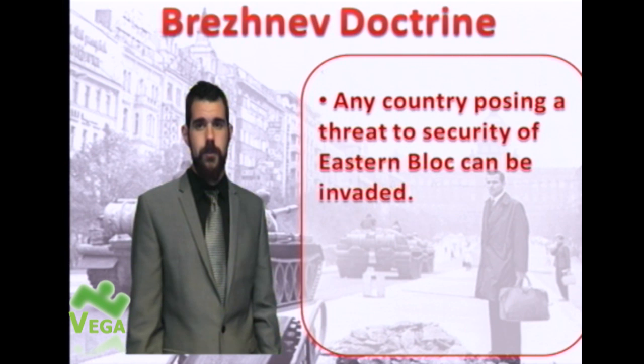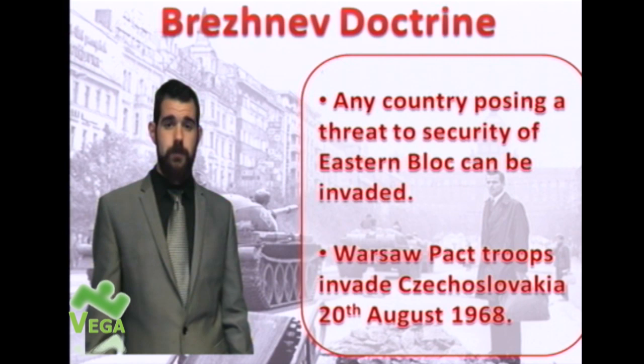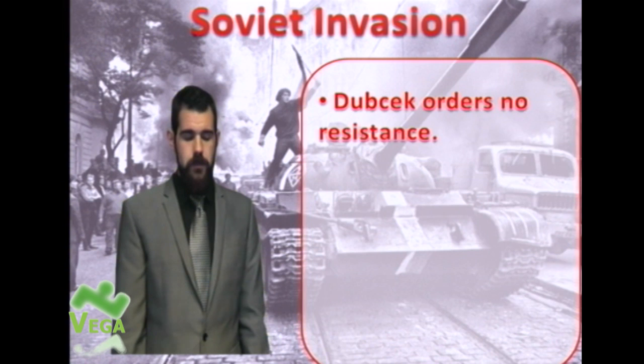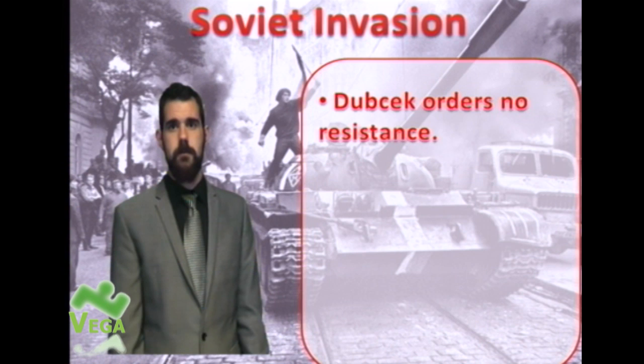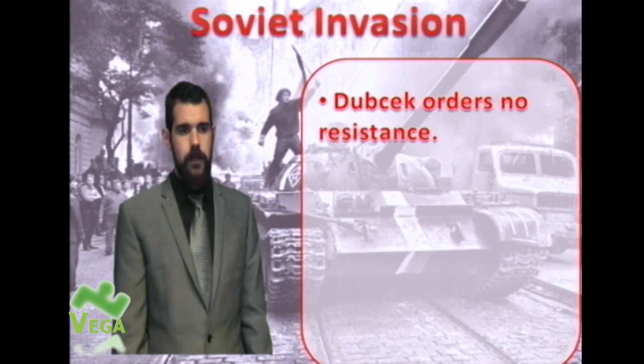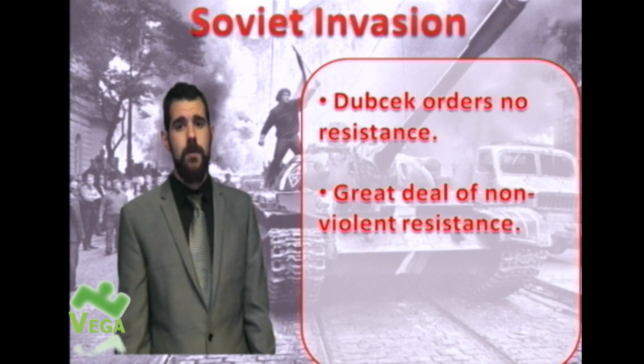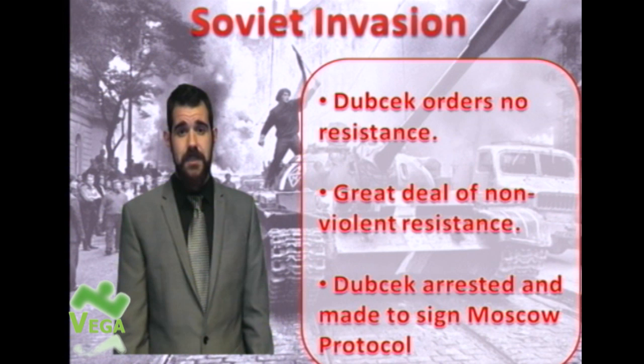This leads to the Brezhnev Doctrine: any country posing a threat to the security of the Eastern Bloc can be invaded. It's a fairly direct doctrine, and they waste no time putting it into practice. Warsaw Pact troops — including Poles, not just Russians — invade Czechoslovakia on the 20th of August 1968. Unlike Hungary, this is not that violent. Some people do die, but Dubček orders no resistance. Despite some protests with placards and firebombs visible in the streets, it's mostly non-violent resistance — not an armed insurrection.